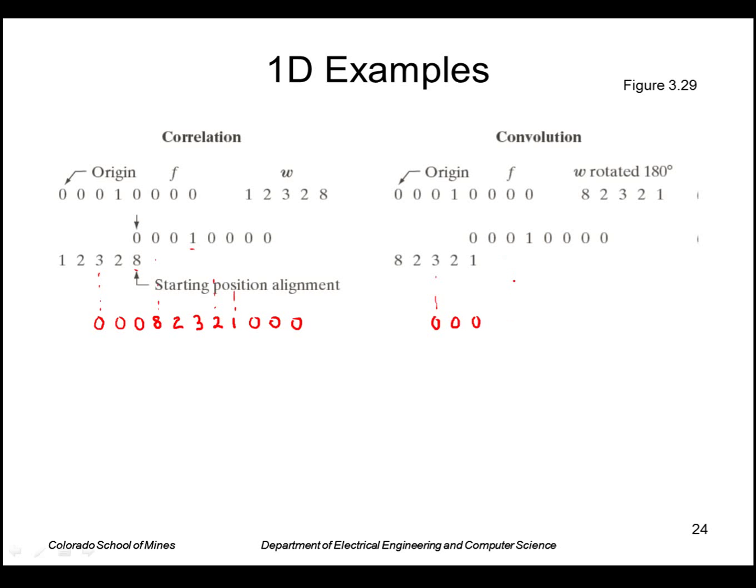When I get to this point centered there, the one overlaps with the one so I get a one as the output. The next position the two overlaps with the one so I get a two, then a three, and a two, and an eight.